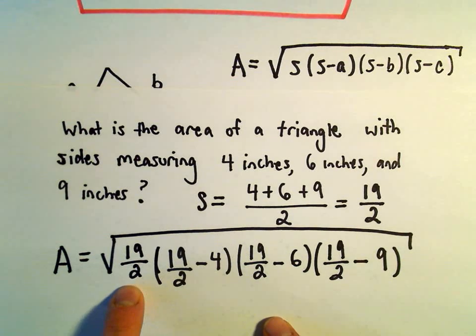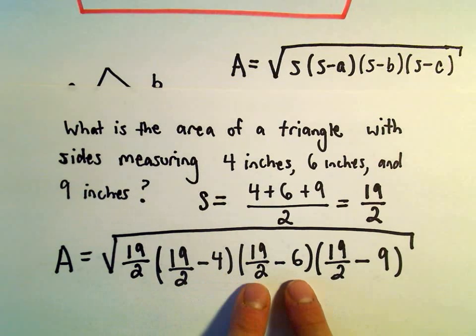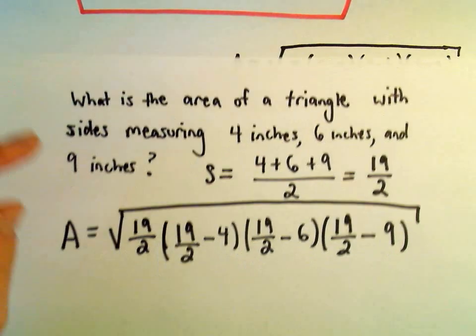And that's going to now be an expression for the area. So again, I'm just taking the semi-perimeter, and then I'm taking the semi-perimeter minus each of the side lengths. Okay, so now it's just a little bit of simplification.